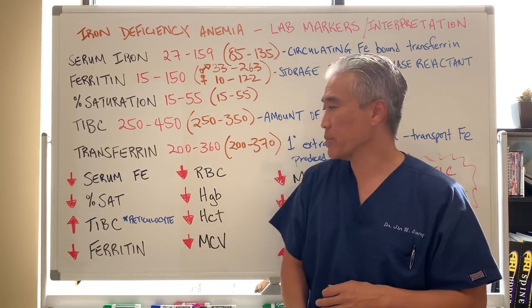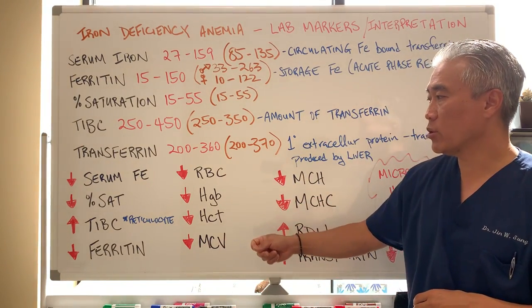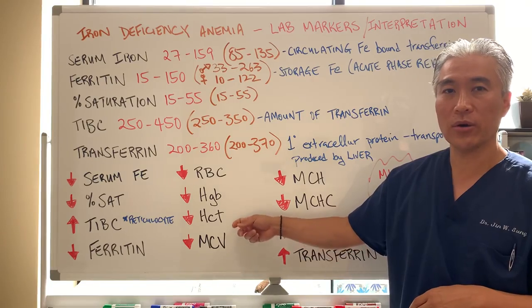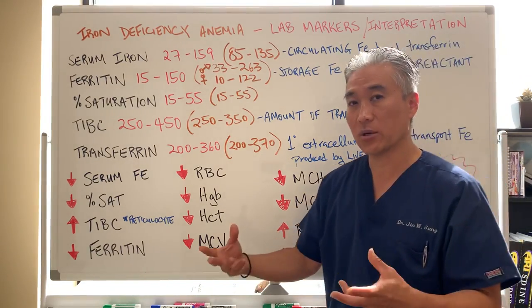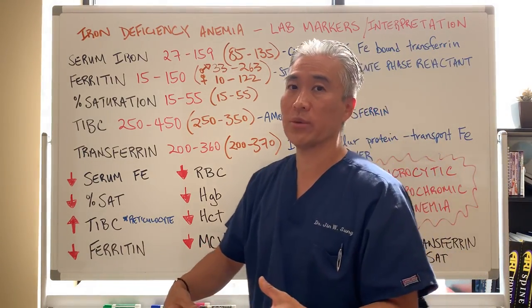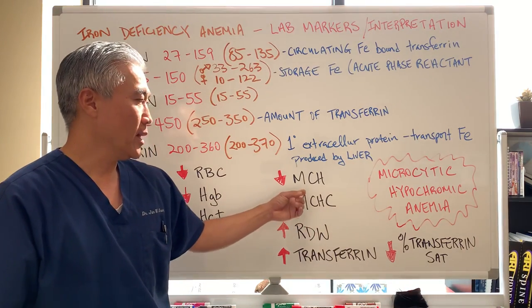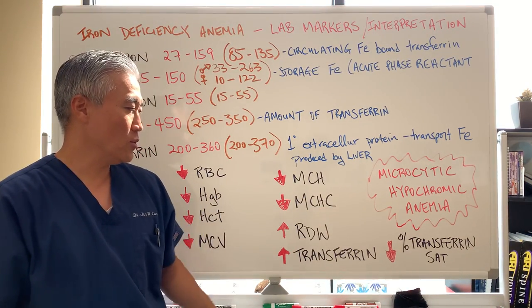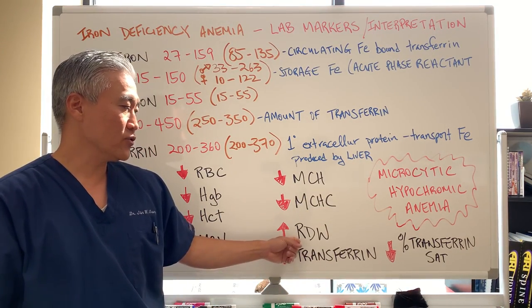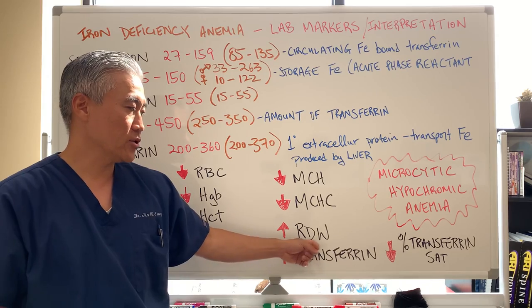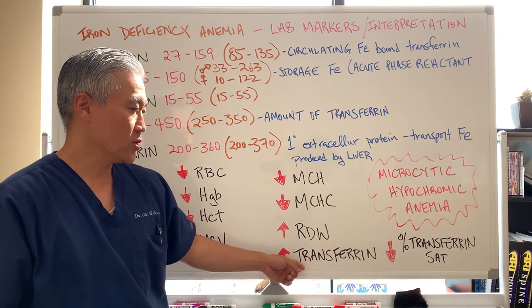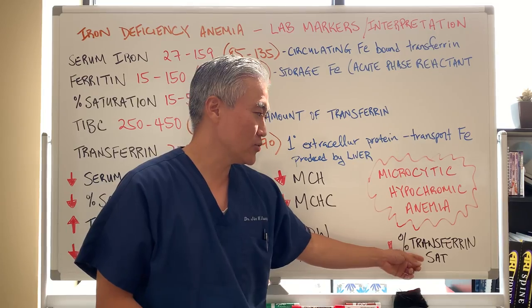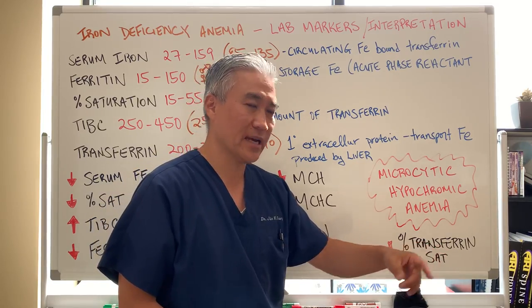Ferritin will also be low. Red blood cell will be low. Hemoglobin will be low. Hematocrit, MCV or mean corpuscular volume will be low. MCH will be low. There will be an increase in red cell distribution width, an increase in transferrin, and a decrease in transferrin saturation.